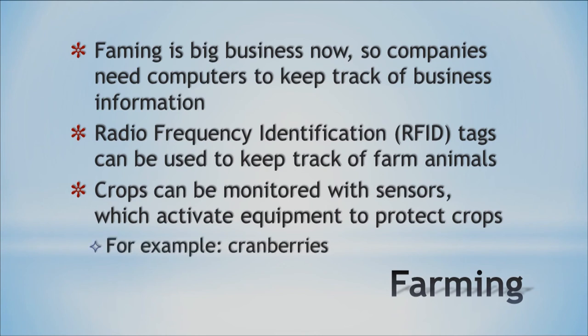A common example is cranberries. They use sensors to monitor temperature, and if it gets below freezing you actually put water on the crops. The water freezes and keeps the crops at that temperature, preventing the fruit or vegetables from getting even colder and ruining the crop. Pretty amazing that you freeze water on crops to stop them from getting colder — but that's what they do. We've got computers with sensors that can do that kind of thing.